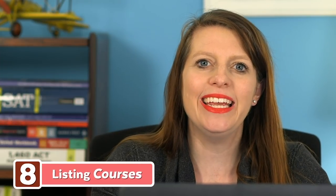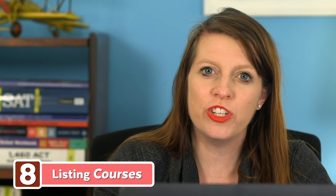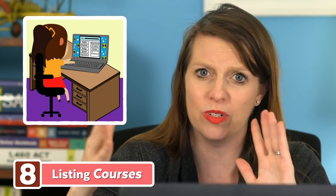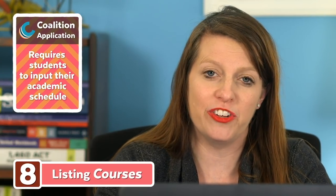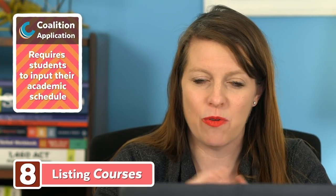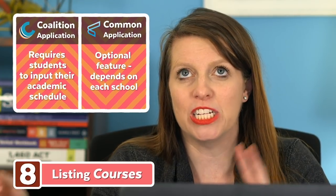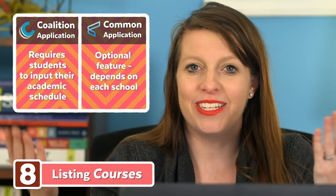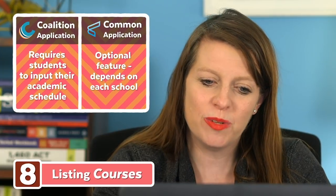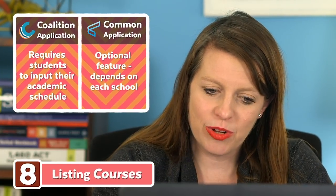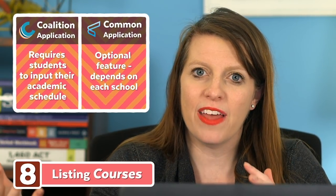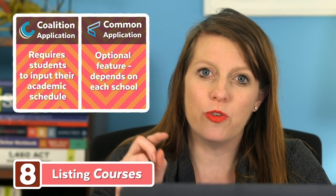One more difference is listing courses. The coalition application forces you to fill in your entire academic schedule from all four years of high school — every class, every grade each semester or quarter, your GPA, basically copying your transcript into the form itself. Some member schools have said this is why they prefer coalition. The common app also now has that feature, but it's optional depending on the school you're applying to — most schools just upload your transcript themselves. So healthy competition pushed common app to add what used to be a coalition-only feature.